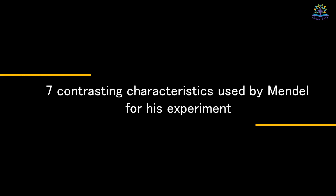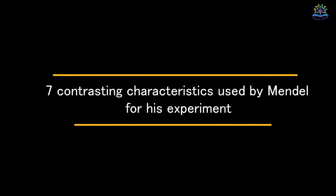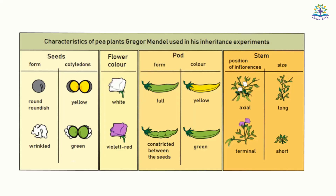Next, let's see the seven contrasting characteristics used by Mendel in his experiments: seed shape — round and wrinkled; seed color — yellow and green; color of the flower — violet and white; shape of the pod — full and constricted; color of the pod — yellow and green; position of the flower — axial and terminal; and height of the plant — tall and short.